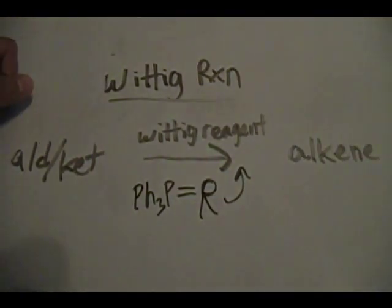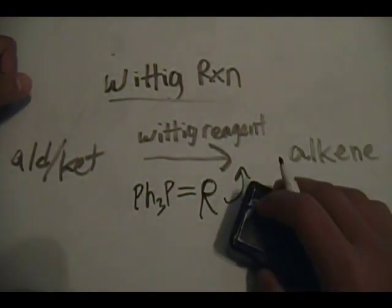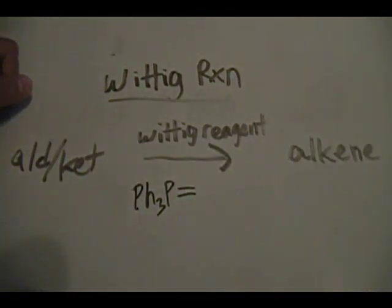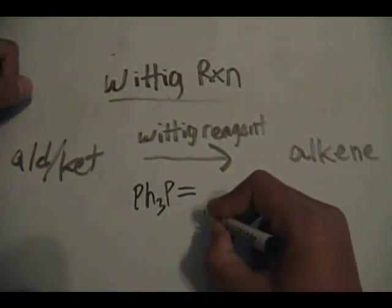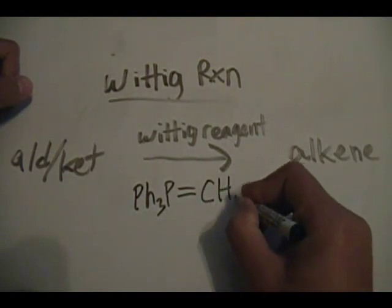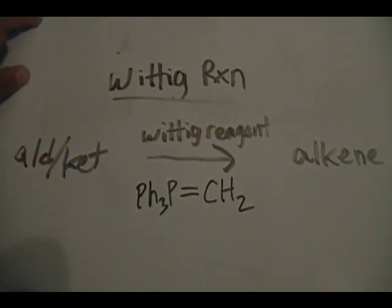The R is your carbon group, some type of carbon group. That is your Wittig reagent. Now the most basic Wittig reagent you'll have is Ph3P=CH2, that's the most basic Wittig reagent.